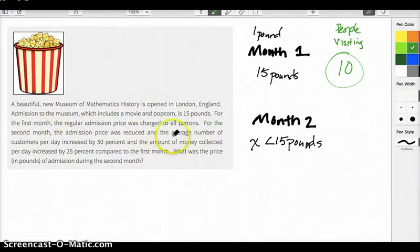For the second month, the admission price was reduced. We got that less than 15 pounds. And the average number of customers per day increased by 50%. So if the average number of customers per day increased by 50%, that means overall the average number of customers who went the next month increased by 50%, right? Because if every day it increased by 50%, then the whole month it must have increased by 50%. Good.